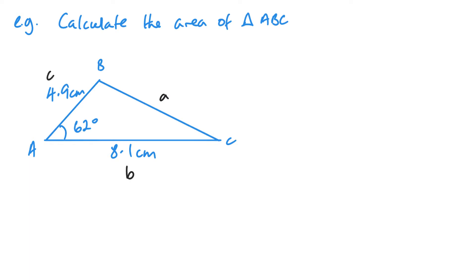I want to find the area. So the area is going to be a half of sides B times C, multiplied by sine A. Like I said before, you don't need to worry about the labelling. You can just label it one way every time. So we've got a half times 4.9 times 8.1 times sine 62.